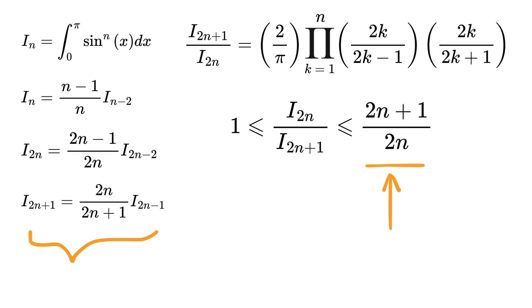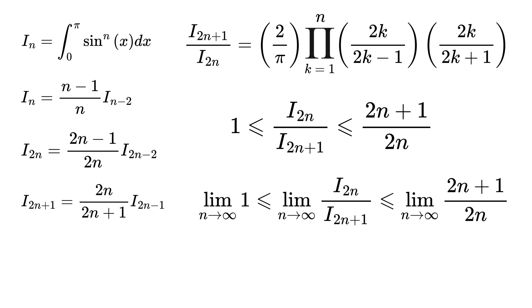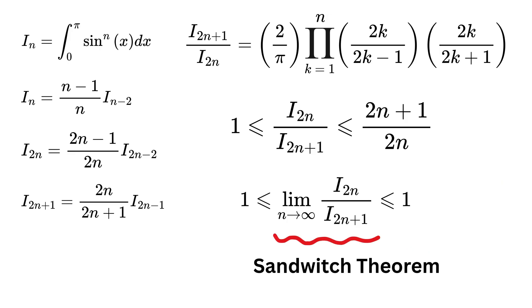Now let us take the limit as n goes to infinity. Here we have 1 on the right side. Divide both numerator and denominator by n to get (2 + 1/n)/2. And as n goes to infinity, this value becomes 1. This means by sandwich theorem, this ratio of I_(2n)/I_(2n+1) will be squeezed between 1 and 1, and thus the limit of this ratio will be exactly equal to 1.